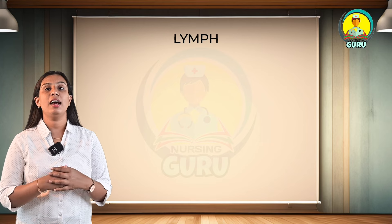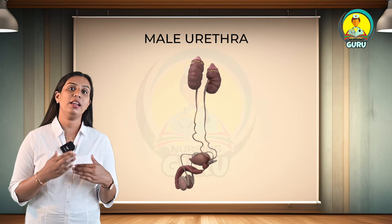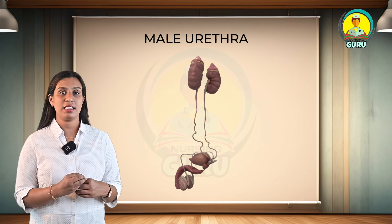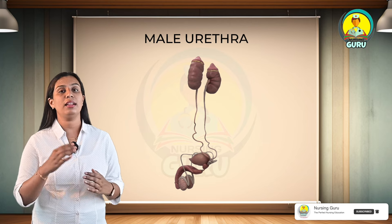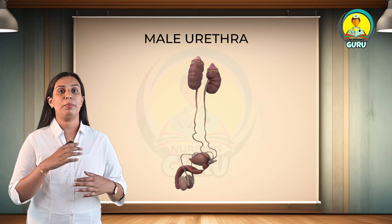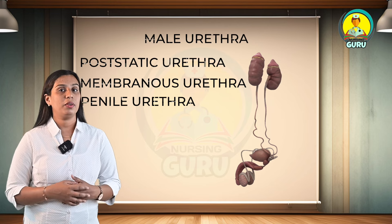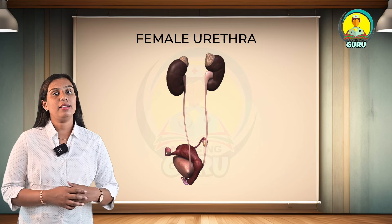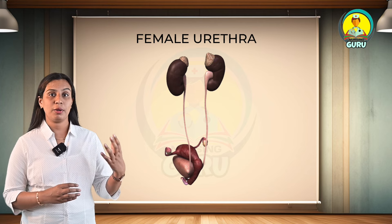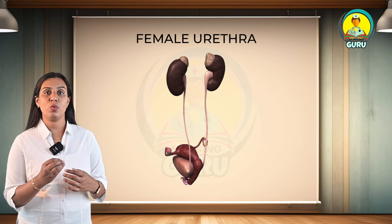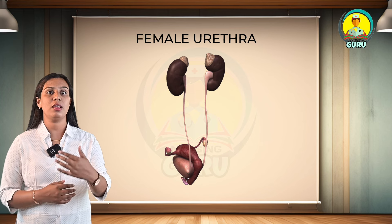Regarding the urethra: the male urethra is about 20 cm or 8 inches long and extends from the neck of the bladder to the external meatus at the glans penis. It is divided into 3 parts: prostatic urethra, membranous urethra, and penile urethra. The female urethra is about 1.5 inches, approximately 4 cm long. It extends from the neck of the bladder to the external meatus, where it opens into the vestibule about 1 inch below the clitoris, and lies in front of the vagina.